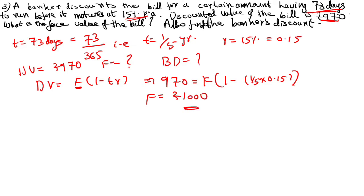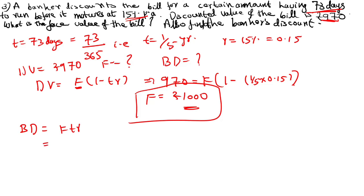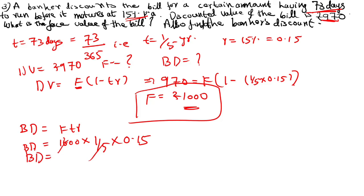Next, calculate BD — banker's discount. We have the formula BD equals F×t×r. So BD equals 1000 × (1/5) × 0.15. Using the calculator, BD is equal to rupees 30.